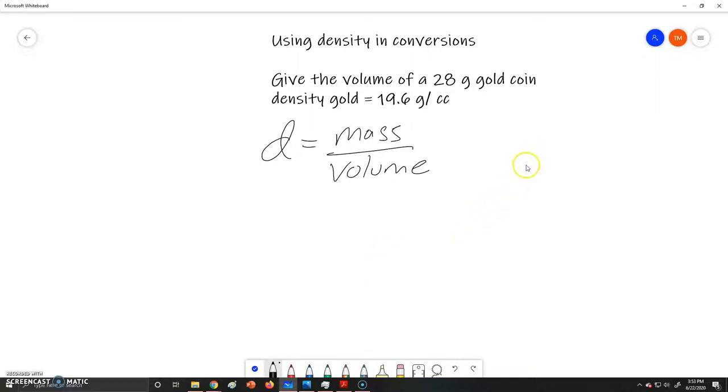In this problem we're given the mass and we're given the density and we're asked to solve for the volume of this gold coin. Our mass here is 28 grams and our density for gold is 19.6 grams per cubic centimeter.